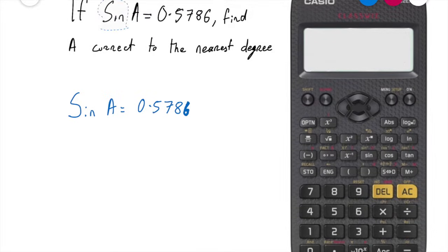So in this question here we're looking for the angle A and we're given the sine of A is going to be 0.5786. So how do I put that into my calculator?